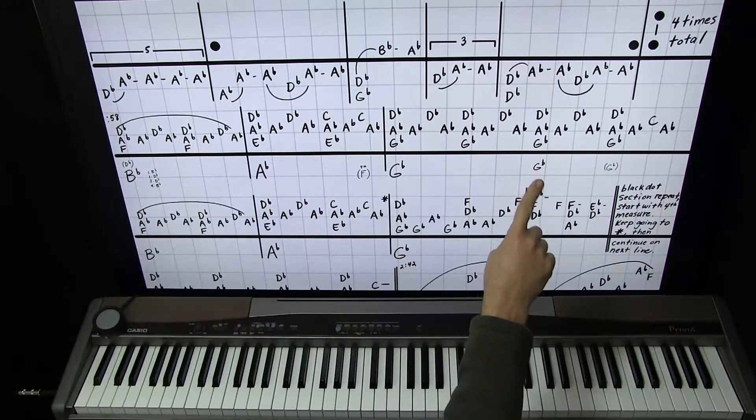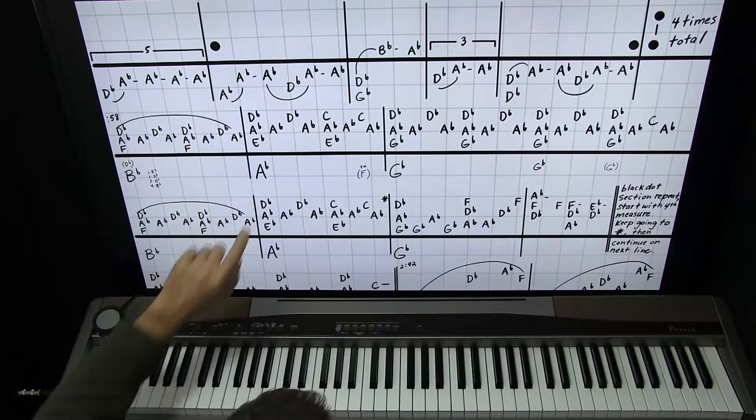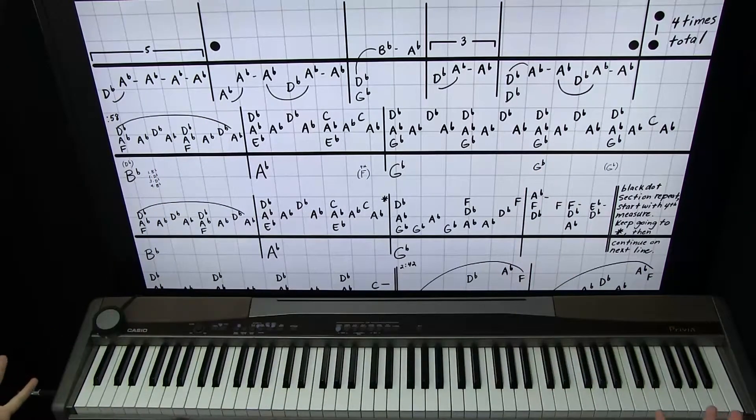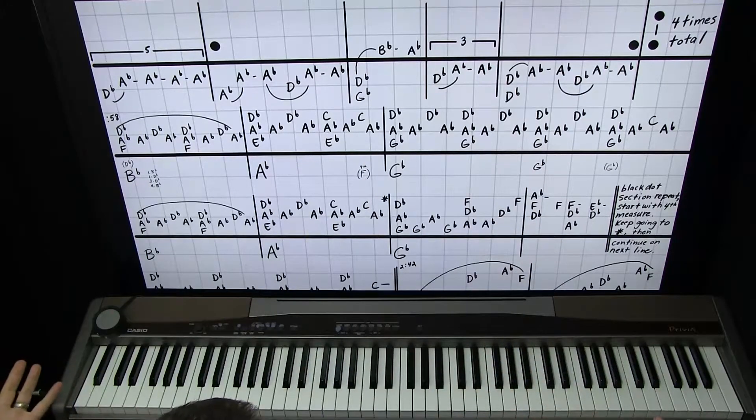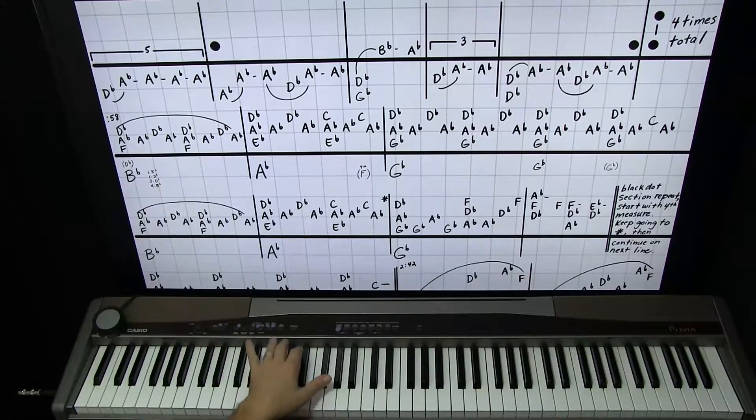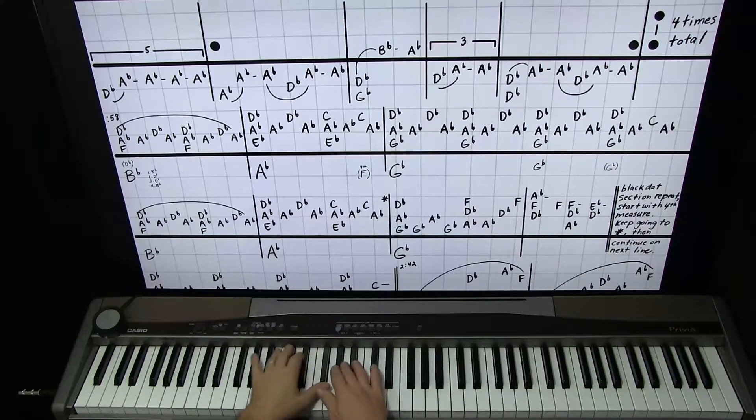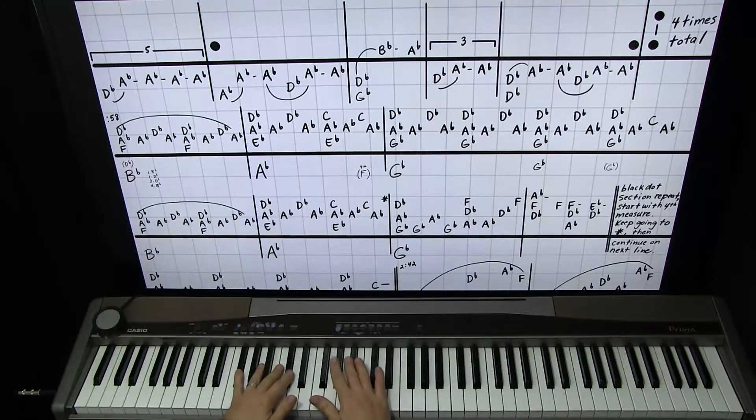Now, after that, I have a dot to dot there four times total. That means go from this dot to this dot four times total. So we've already done it once, so it's three more times. So let's do it the second time now and go.